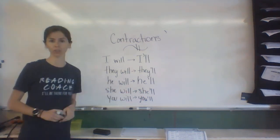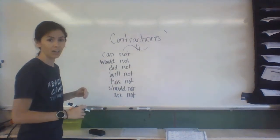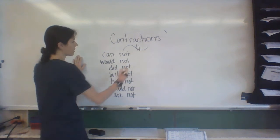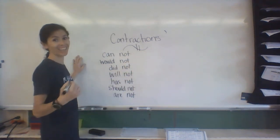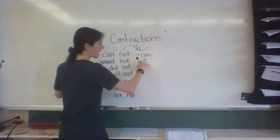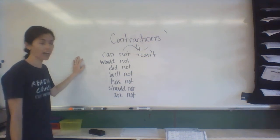Now we're gonna take 'cannot.' I think you know where we're going with this one. Instead of saying 'I cannot go to the store,' we can shorten it: can, apostrophe, T. 'I can't go to the store today.'